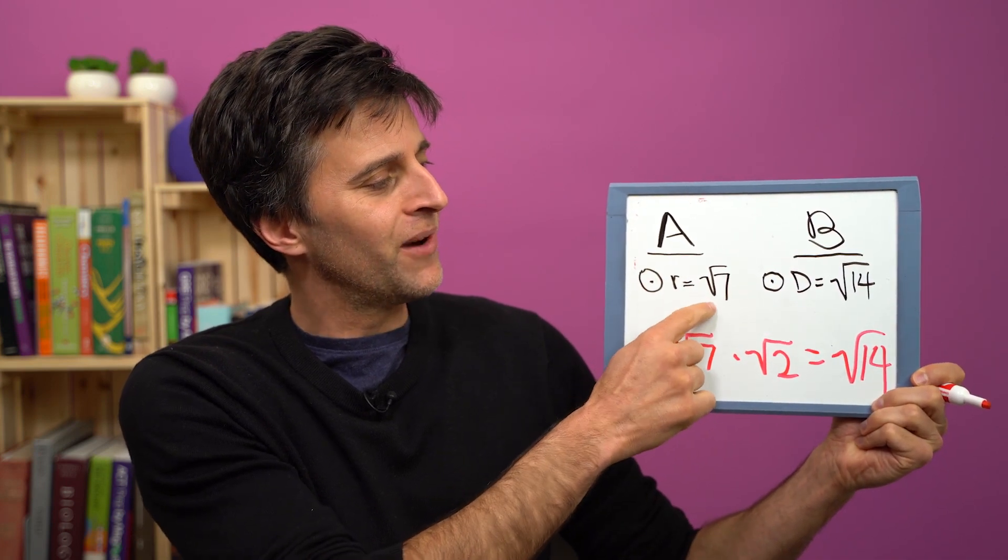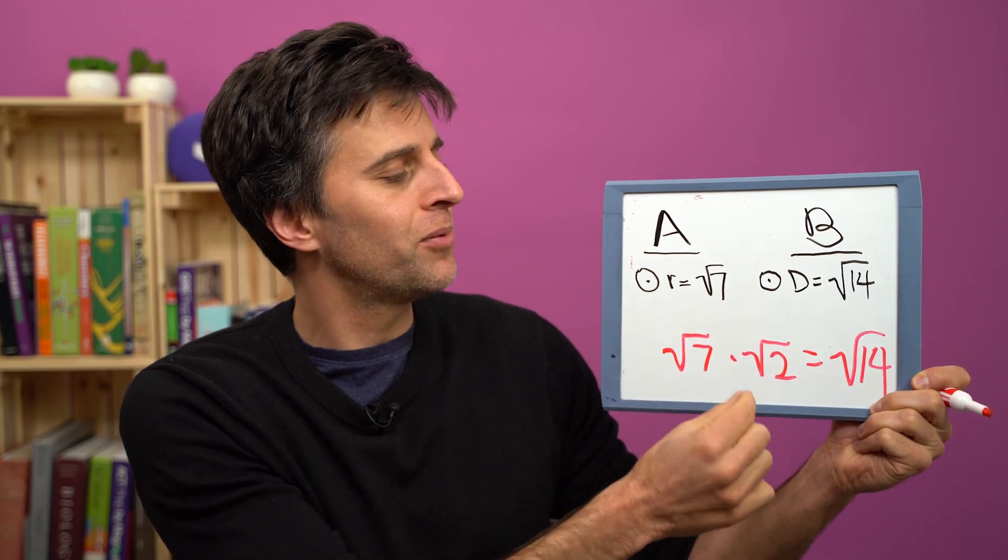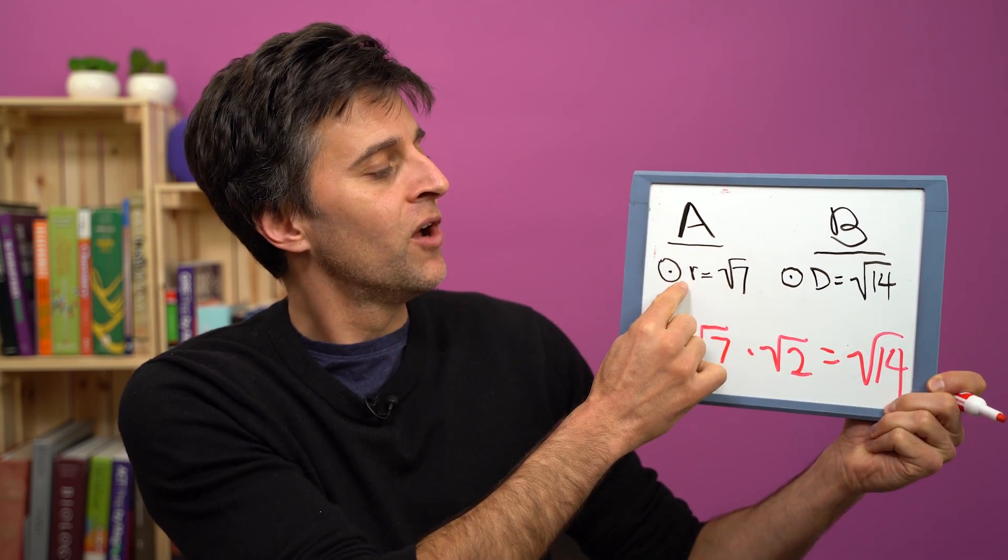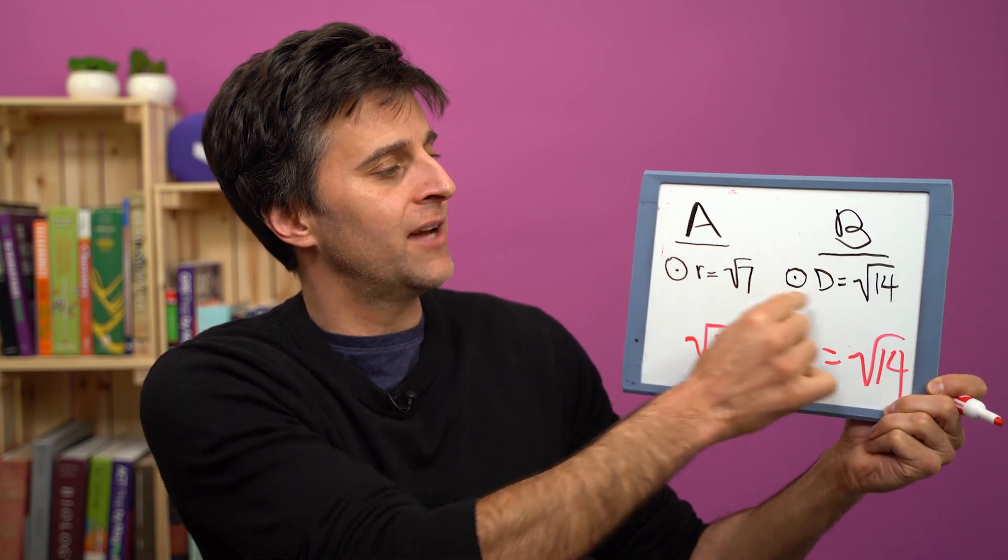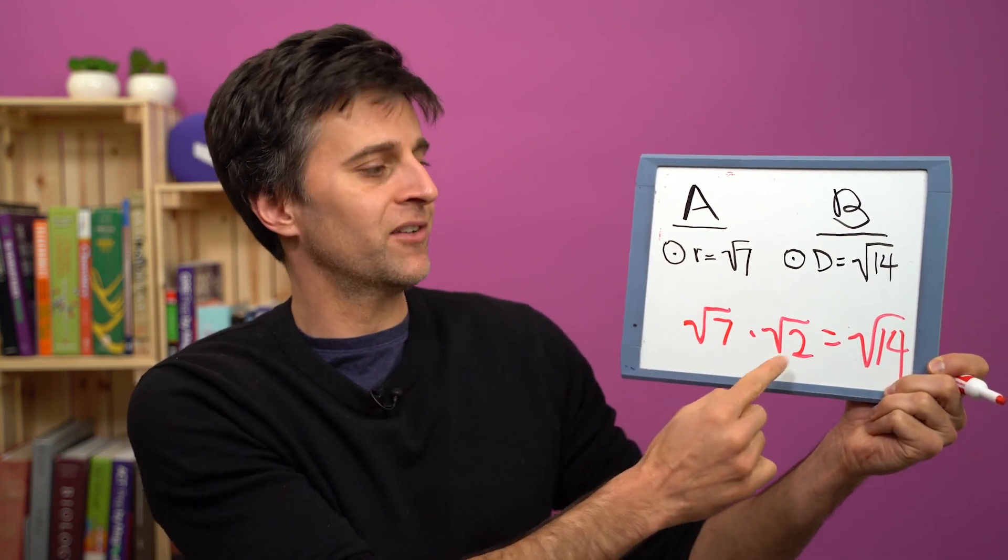So notice that when you're going from radius to diameter, you're not multiplying times root 2, which is less than 2, but you're multiplying times 2. So double of root 7 would actually be 2 times root 7, which is bigger than root 14, which again is root 7 times root 2.